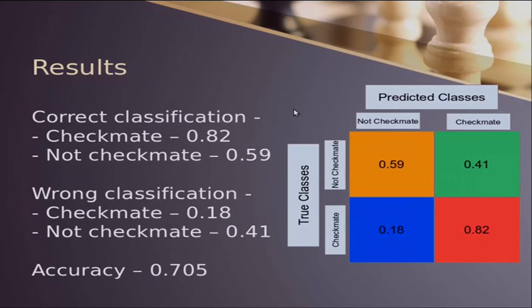With accuracy of 70%, we had, for the cases who were checkmate, we were able to say 80% that this is a checkmate. And for not checkmate, we were able to say in 59% of the time that it's not a checkmate. But then we had some misclassifications. So we want to be much better than a monkey. So we moved to the next thing.